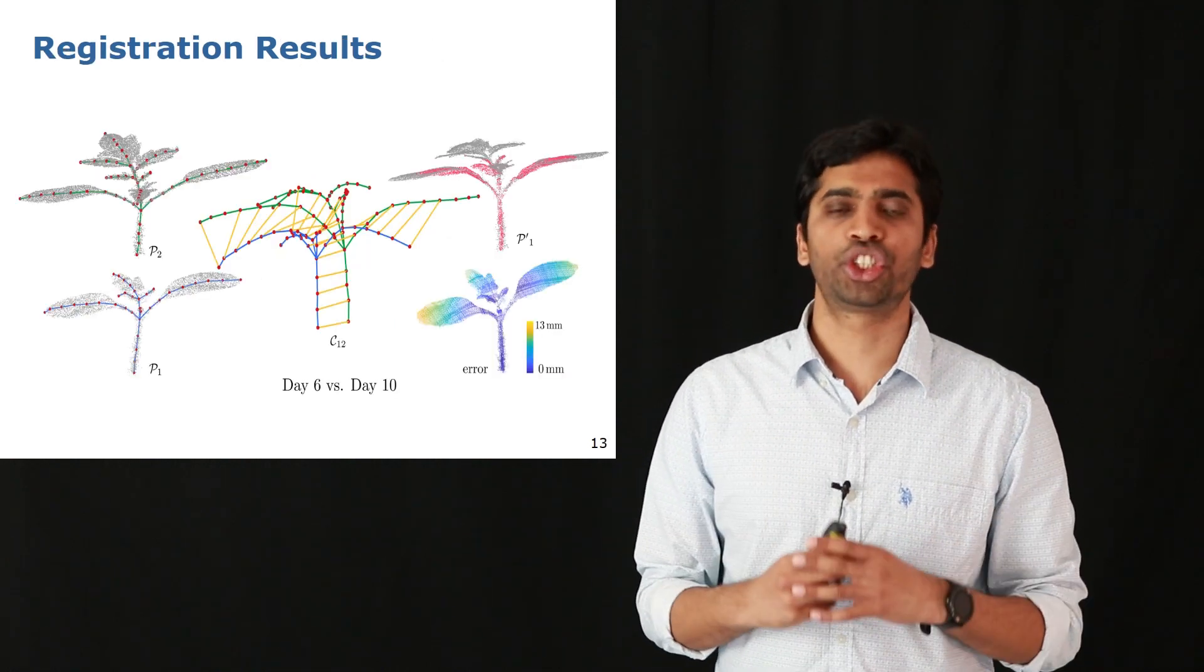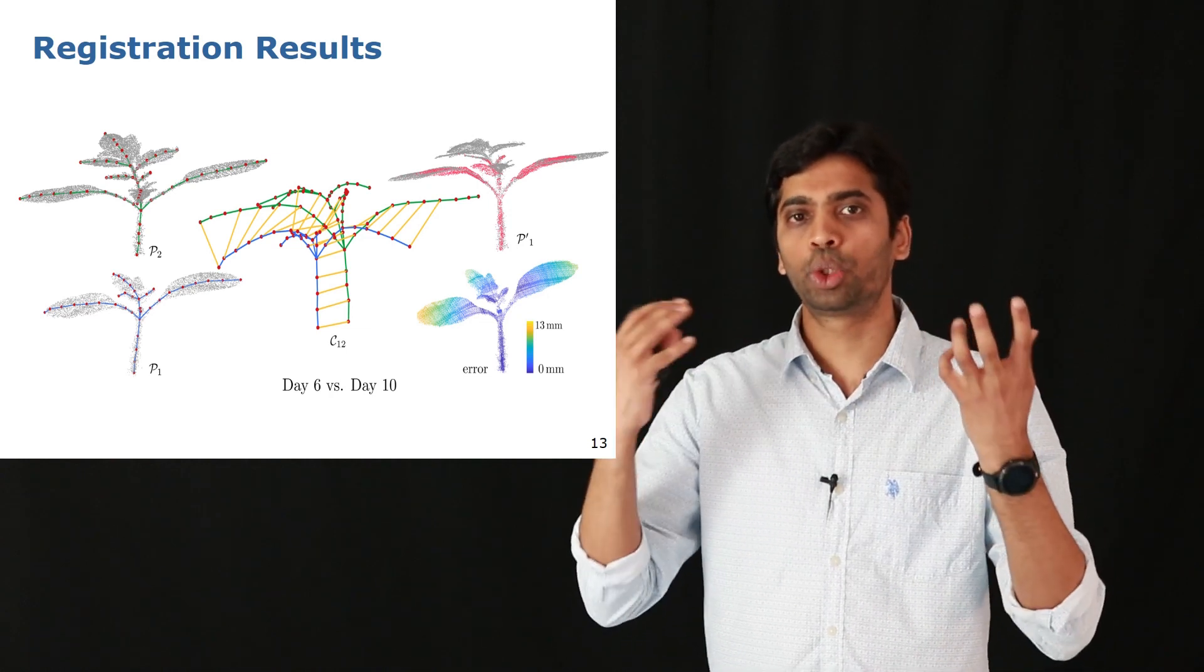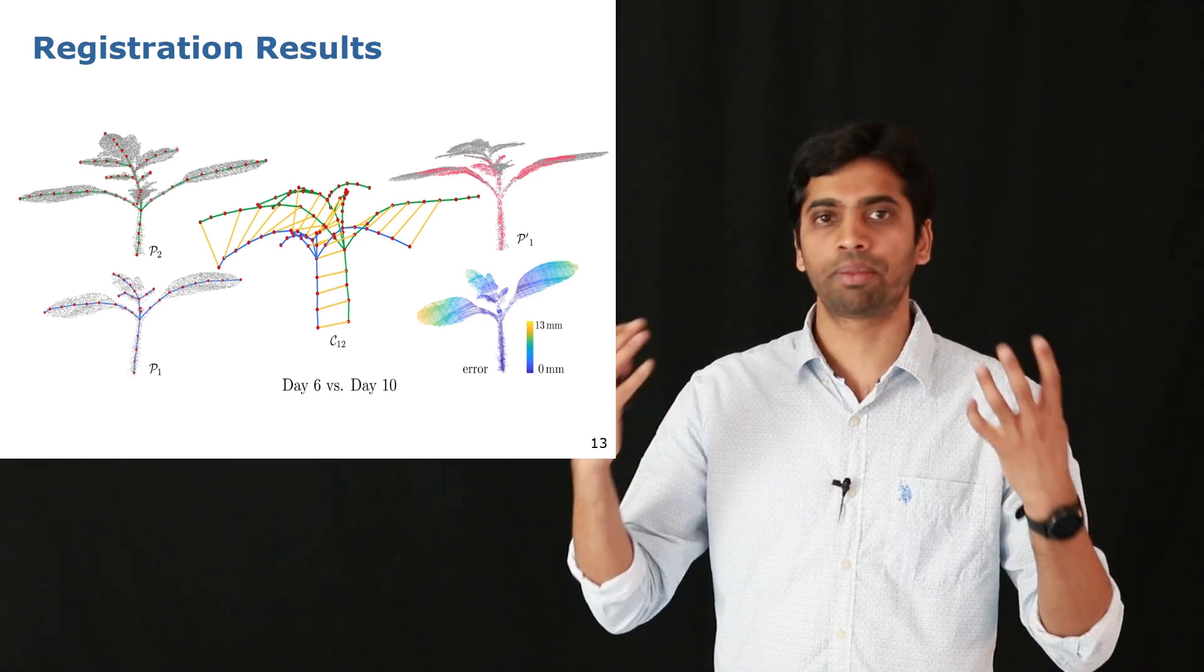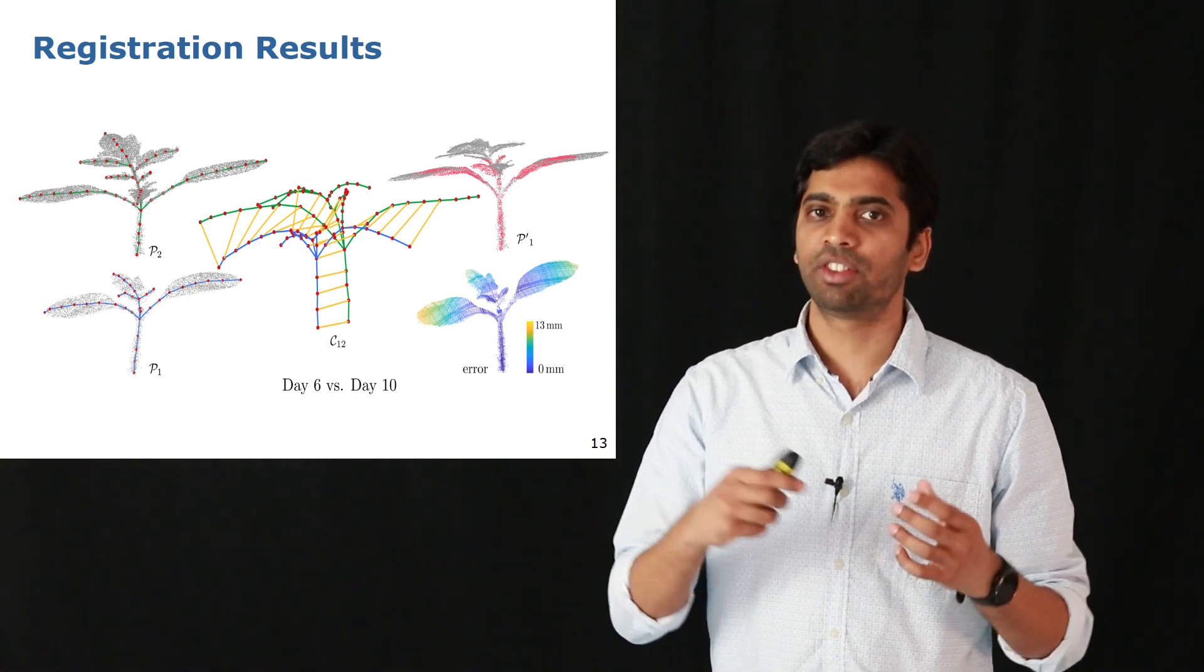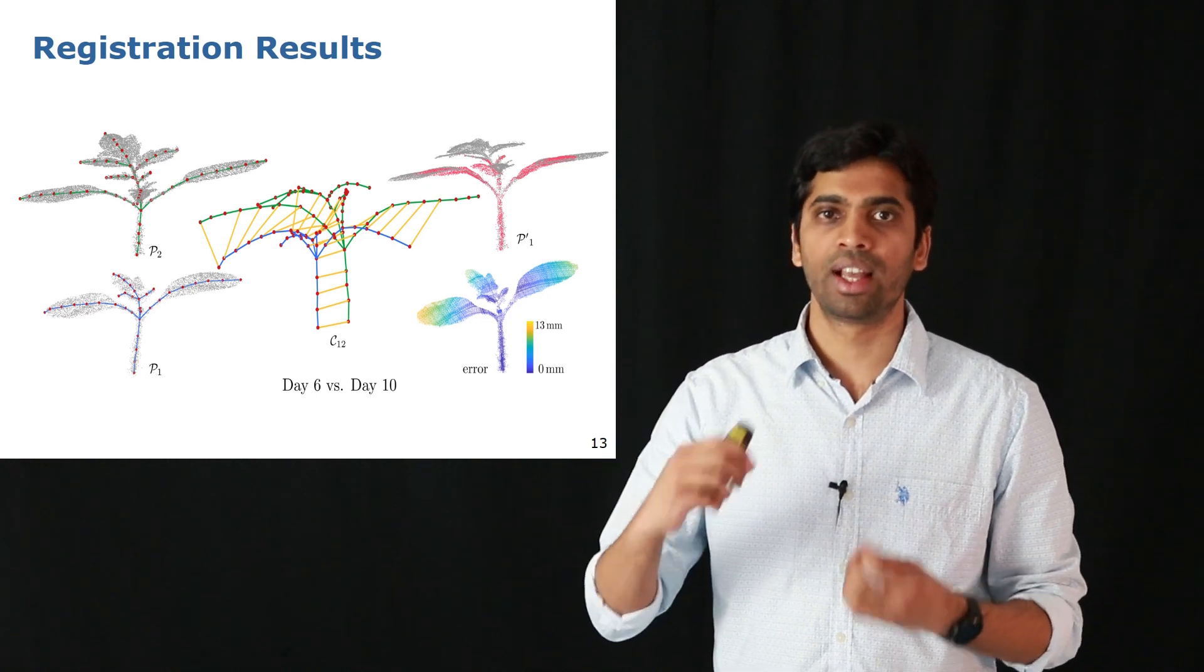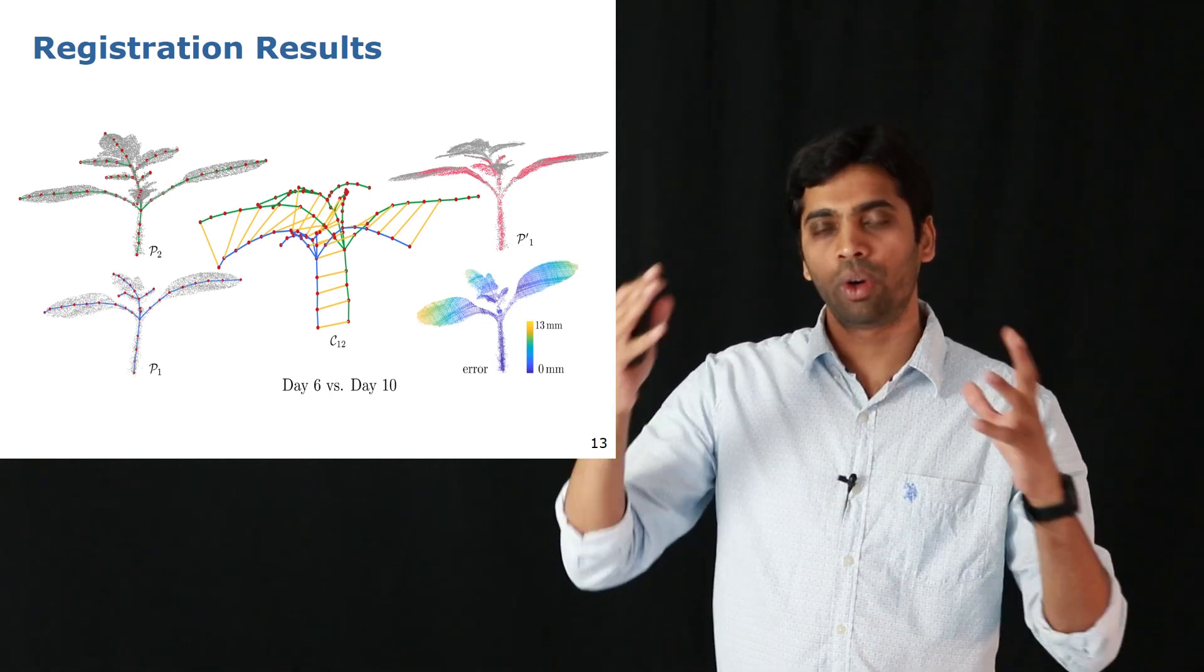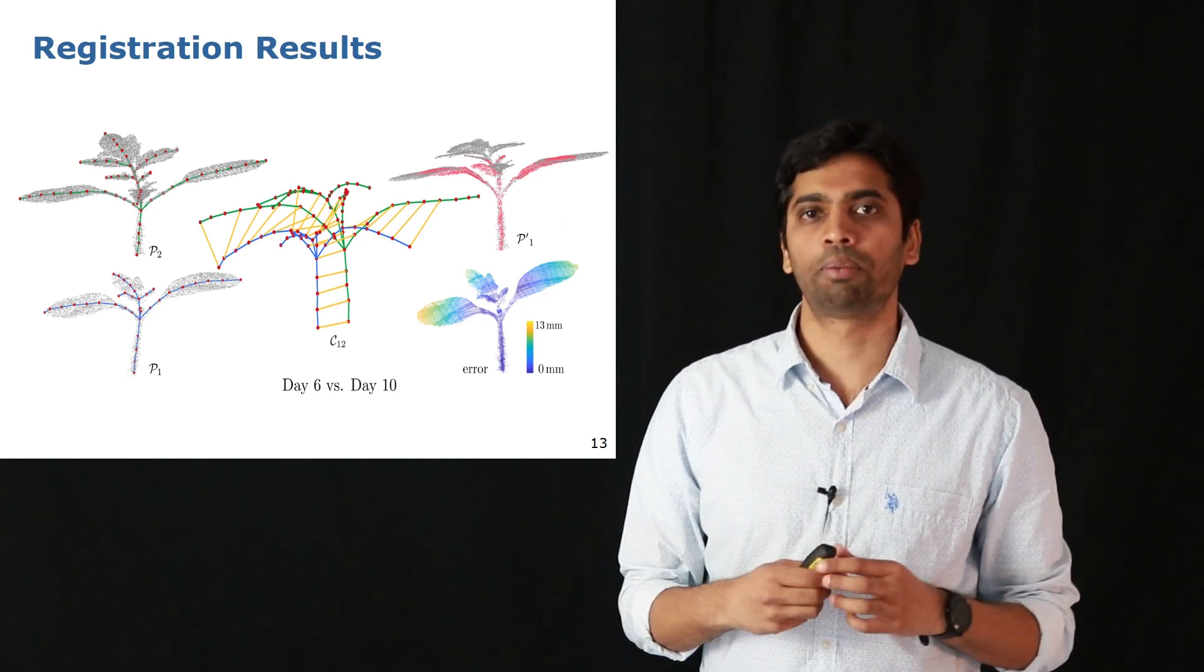We also check our results on a more challenging dataset by registering two point clouds which are temporally separated even more. Here we take two point clouds separated by four days and perform our registration process. As we can see in the center, we are able to reliably find the correspondences joining the two skeletons and then estimate the corresponding deformation parameters. Finally we apply the whole deformation to the source point cloud and plot it onto the target point cloud.